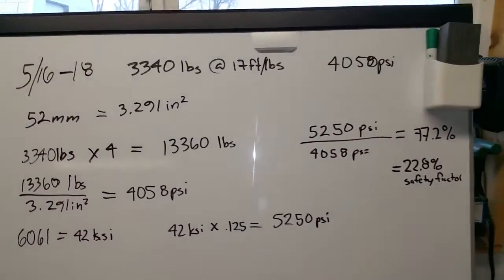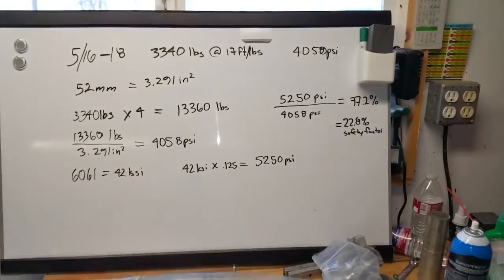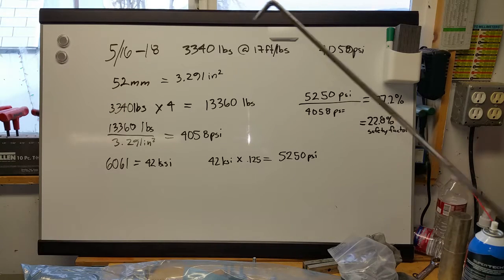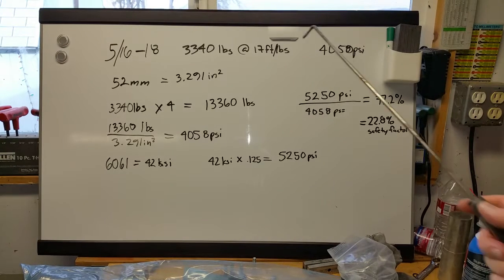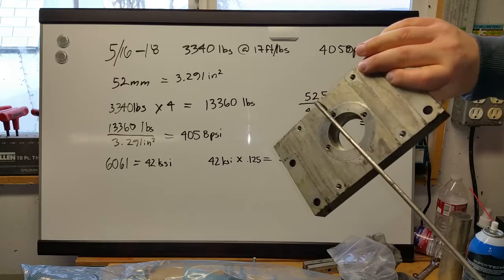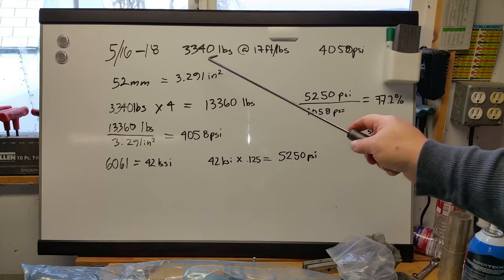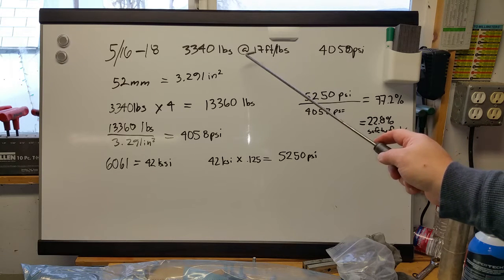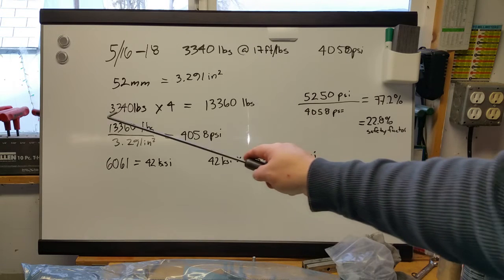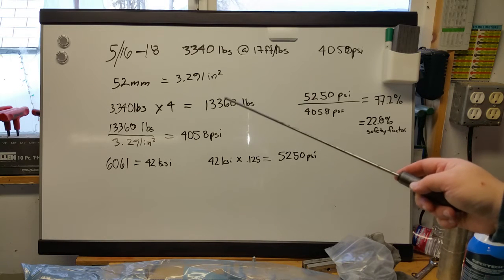I did some math here. So what we have here is there's four bolts that hold the bearing retainer to the back of the plate. Those bolts are 5/16-18 bolts. Now I looked it up, and 5/16-18 grade 5 bolts should be torqued to 17 foot-pounds. And when torqued dry at 17 foot-pounds, you'll get 3,340 pounds of clamping force. Now if you multiply that 3,340 pounds of clamping force by the four bolts, you get 13,360 pounds. That seems like a lot, and it actually is.